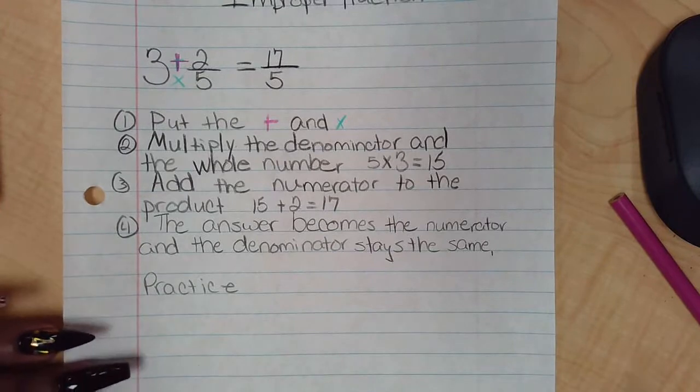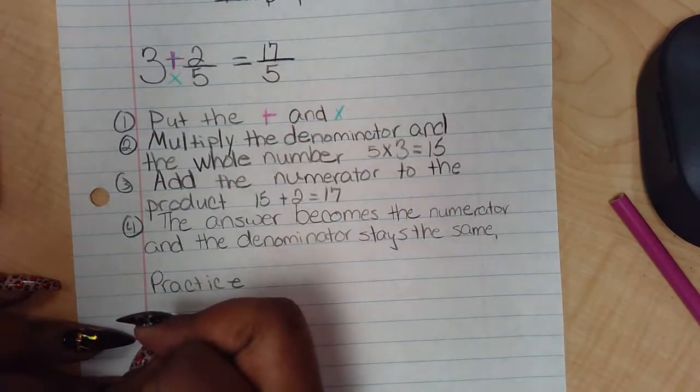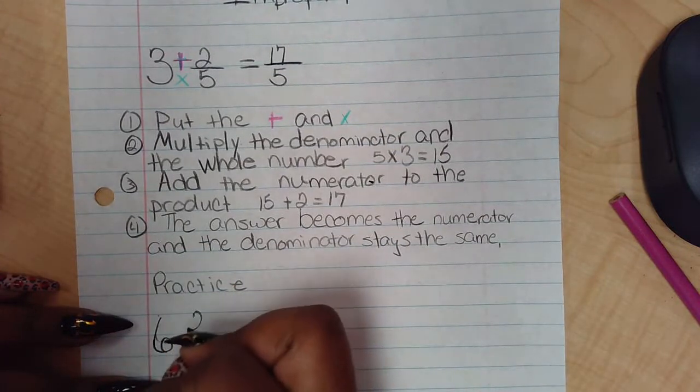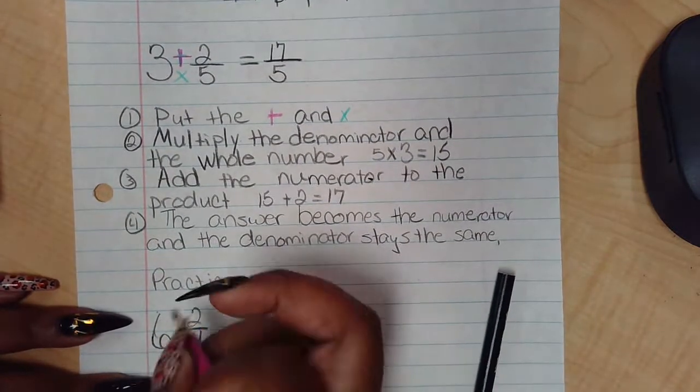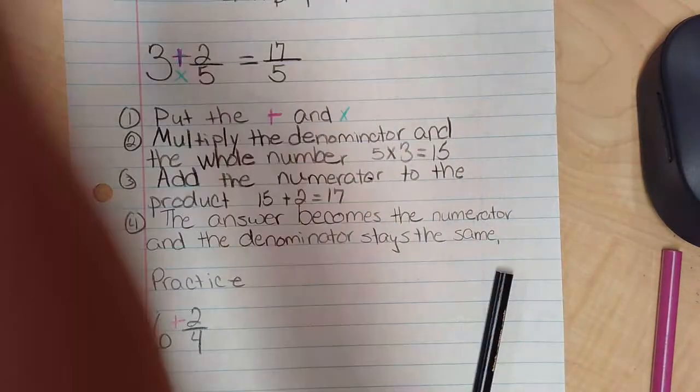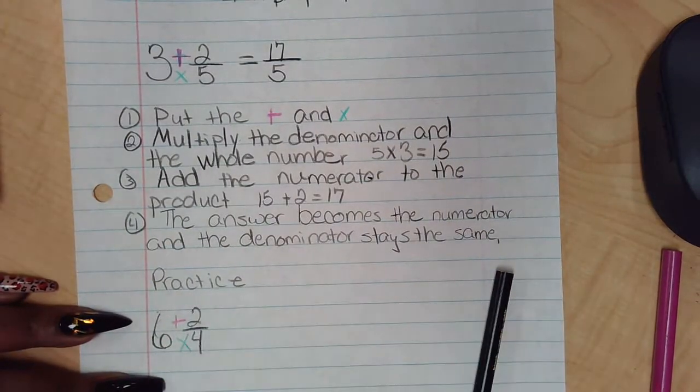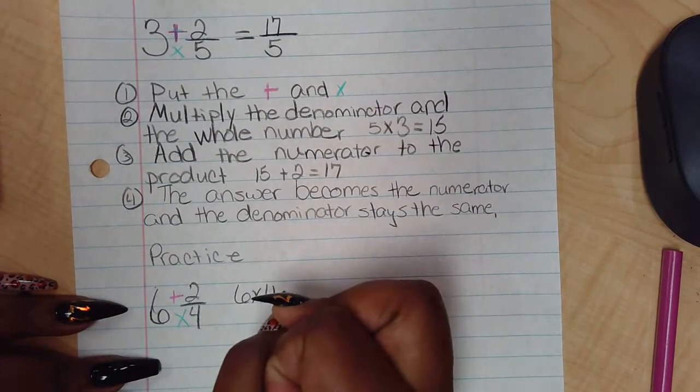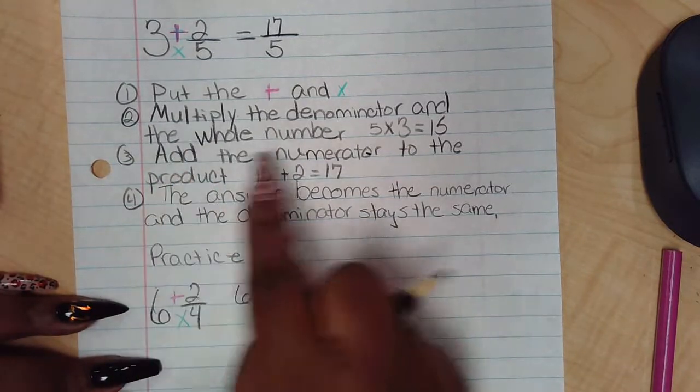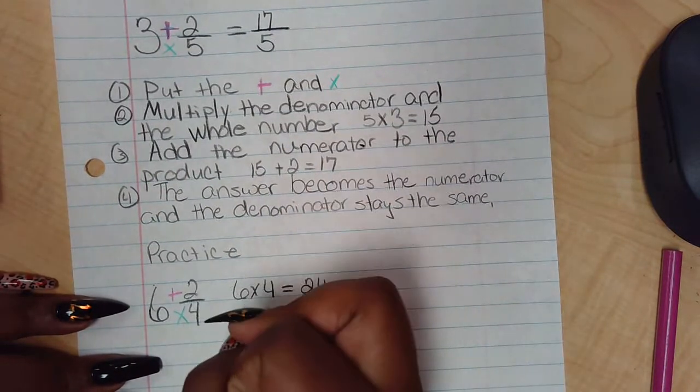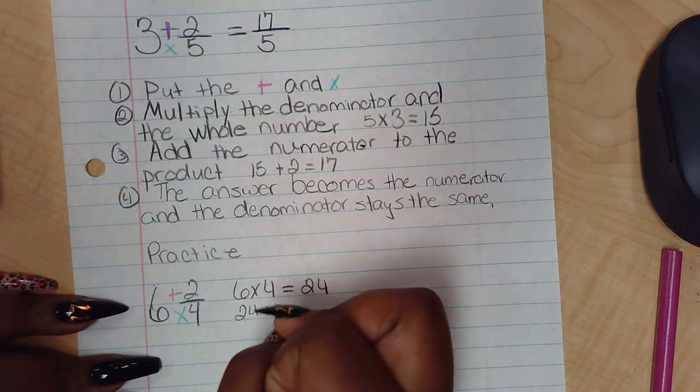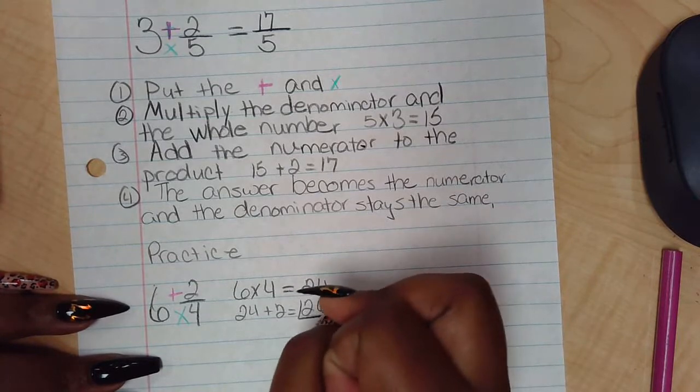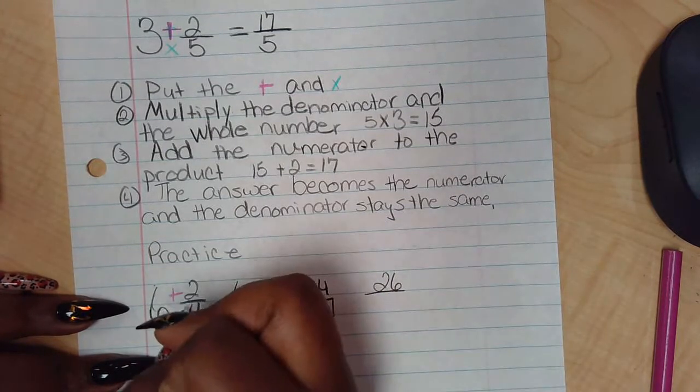So let's do a couple examples. We have 6 and 2/4. Step one said to put the T and the X. Now I want to multiply 6 times 4 equals 24. Then step three says 24 plus 2 equals 26. Then I place my new answer, 26, above my denominator, which is 4.